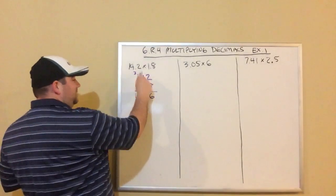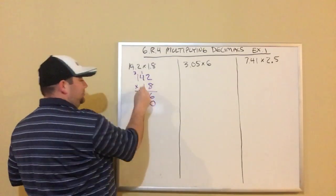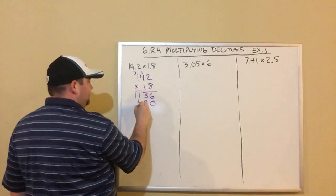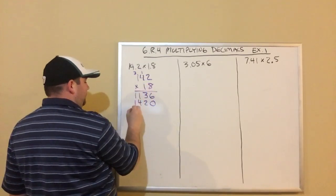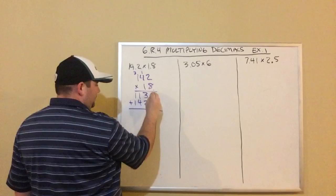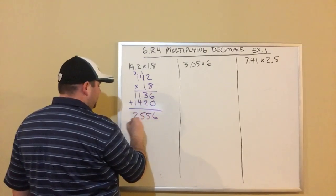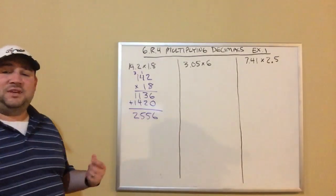Next I'm going to do the 1 times each thing, but remember you got to add a 0 because really this is 10 times each thing. 1 times 2 is 2, 1 times 4 is 4, 1 times 1 is 1. Now I'm going to add these together. I got 6, 5, 5, 2.